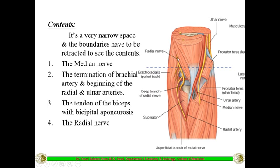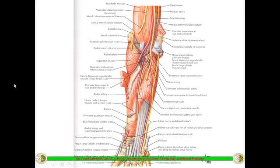The fourth important structure is the radial nerve itself. In the arm, the radial nerve passes through the radial groove, grooves the humerus, then comes to the front and enters the cubital fossa on the lateral side. So from medial to lateral: first the median nerve, second the brachial artery with its two terminal branches, third the biceps tendon, and fourth the radial nerve.